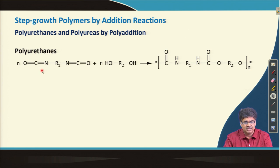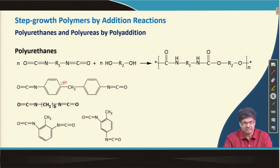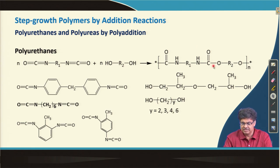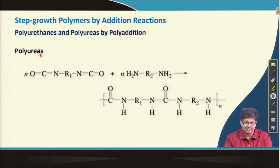Polyurethane is synthesized by reacting isocyanates with alcohol groups — specifically diisocyanates with dialcohols. Some examples of diisocyanates and dialcohols are shown here. They react with each other forming a urethane linkage in the polymer backbone. Polyureas can be synthesized by reacting diisocyanates with diamines, forming a urea linkage in the backbone.